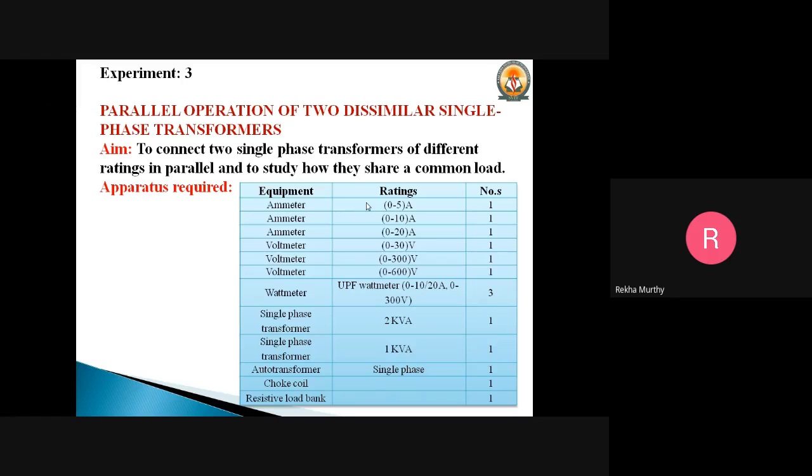We require three UPF wattmeters and a 2 kVA transformer and one more 1 kVA transformer. For these two, the supply will be given through the auto transformer. We require the choke coil and the resistive load bank which will be connected on the secondary part of the circuit.